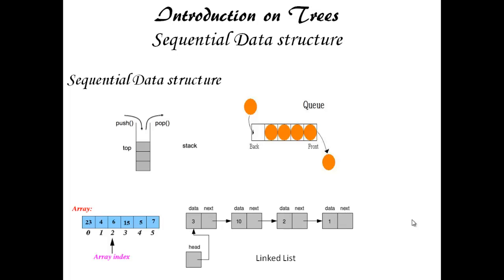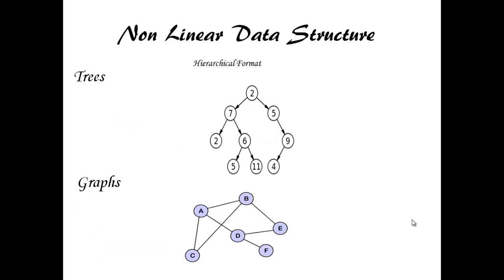Now, I am going to introduce non-linear data structure. Non-linear data structure is a data structure in which data are not arranged in sequential order, where each item is connected to several other items in hierarchical format. Trees and graphs are the examples of non-linear data structure.